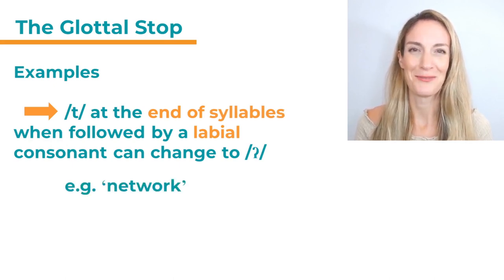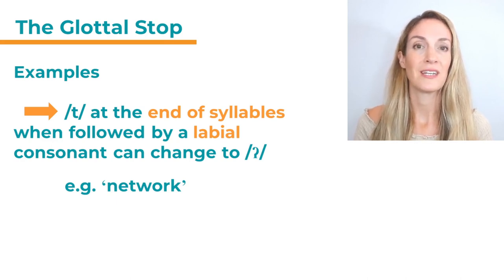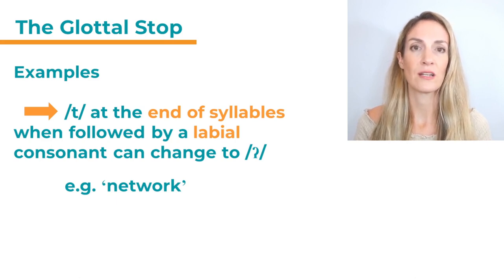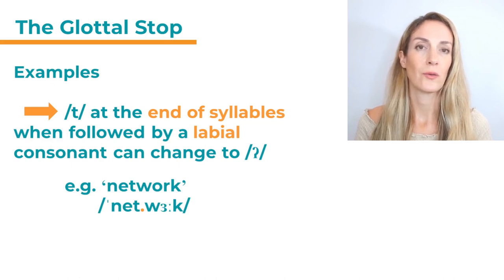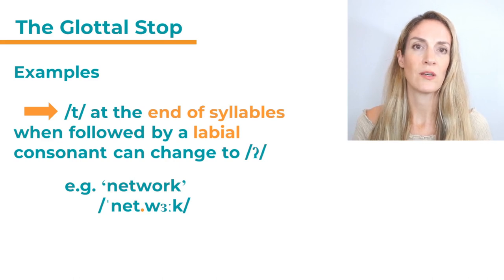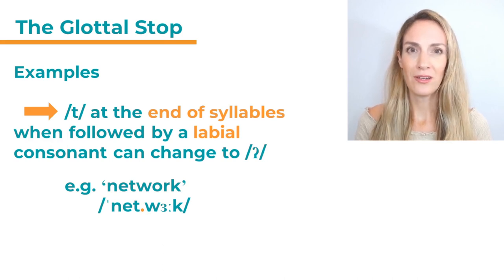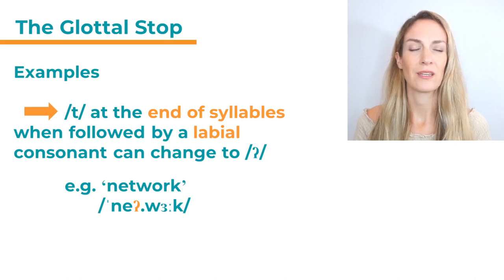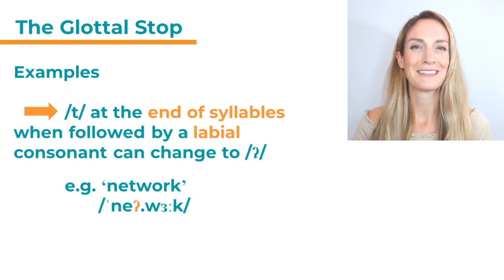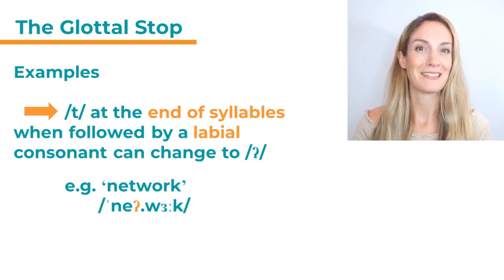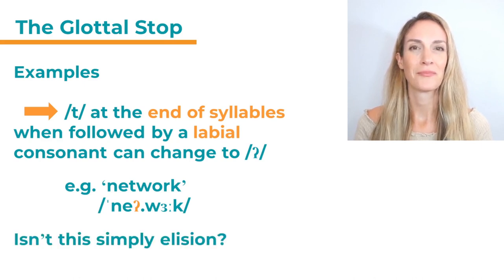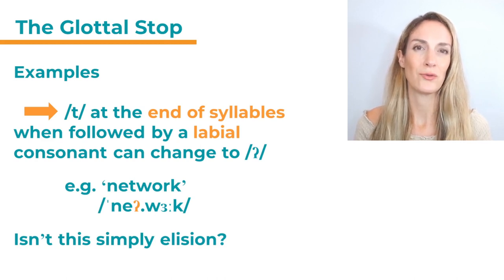Let's look at an example: the word 'network'. It has two syllables, and at the end of the first syllable we have a T sound — 'net work'. The sound at the beginning of the second syllable is a W, and if you watch my lips, both lips are involved in the sound production, so this is a labial consonant. 'Network.' So here we can change the T into a glottal stop.